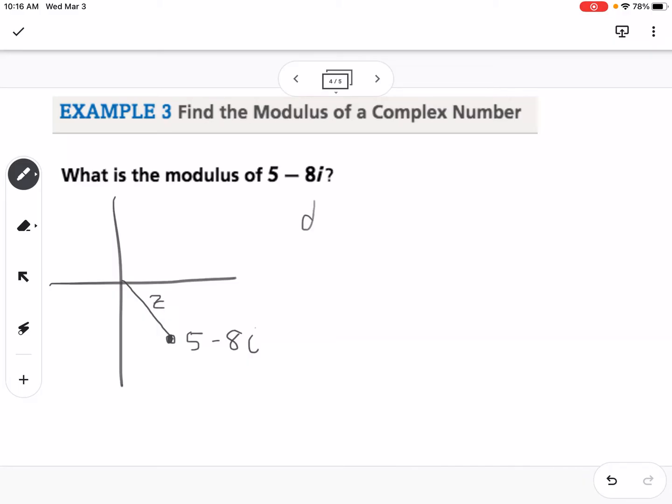So if we think back to the distance formula, the distance formula is x2 minus x1 squared plus y2 minus y1 squared. If we're talking about the distance from 0, that means one of our points is just 0, 0. So you're really just finding the components squared of your complex number. So the modulus would be the square root of your a squared plus b squared.